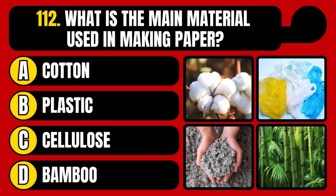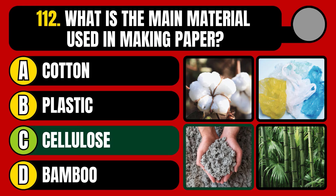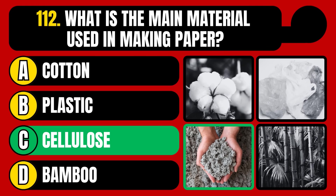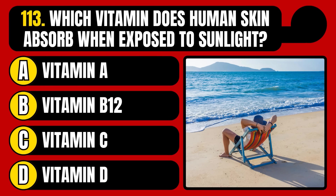What is the main material used in making paper? Cotton, plastic, cellulose, or bamboo? The correct answer is option C, cellulose.